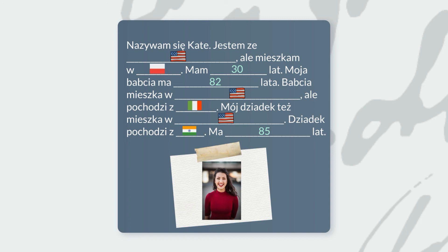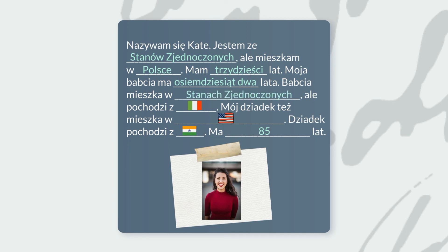Okay, now let's try to check. Nazywam się Kate. Jestem ze Stanów Zjednoczonych, ale mieszkam w Polsce. Mam trzydzieści lat. Moja babcia ma osiemdziesiąt dwa lata. Babcia mieszka w Stanach Zjednoczonych, ale pochodzi z Włoch. Mój dziadek też mieszka w Stanach Zjednoczonych. Dziadek pochodzi z Indii. Ma osiemdziesiąt pięć lat. How did it go? Did you get everything correct? Don't worry if you didn't. Now you can pause the video again and read it to practice.